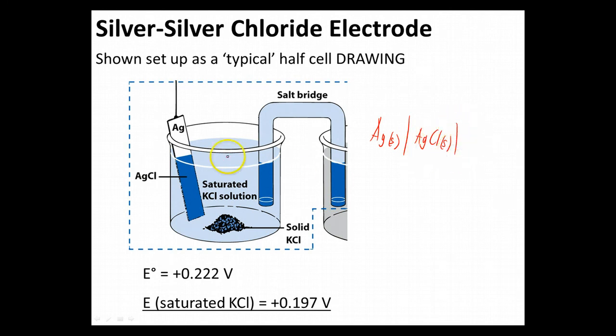Chloride is a negative one and so we'll have a one-to-one stoichiometry. We'll have our bar showing the next state of matter change. And then when we look around it, we're going to have a KCl solution that's aqueous. And as drawn there we can even specify that the concentration is saturated.